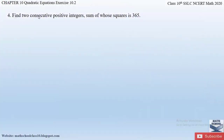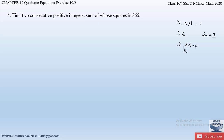Question number 4 from exercise 10.2 says — find two consecutive positive integers the sum of whose squares is 365. A consecutive positive integer is one whose difference from the next is always 1. For example, if the first integer is 10, the next consecutive integer is 10 plus 1 equals 11. Similarly, 3 and 4, or 1 and 2, are consecutive integers.